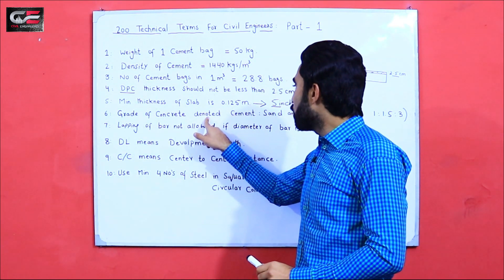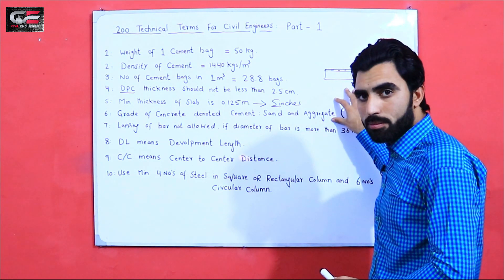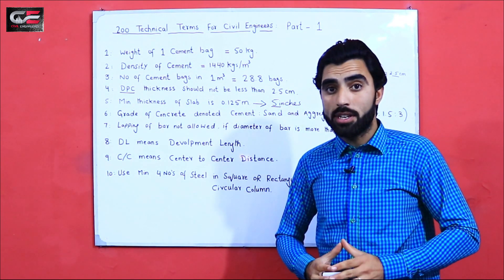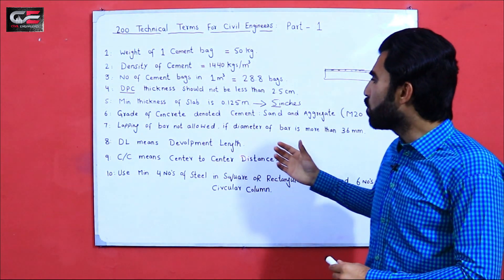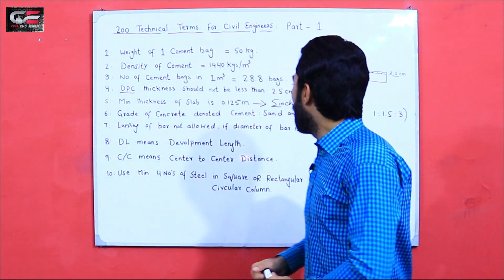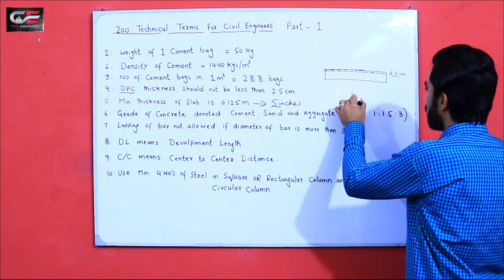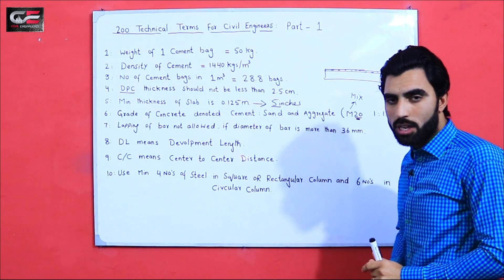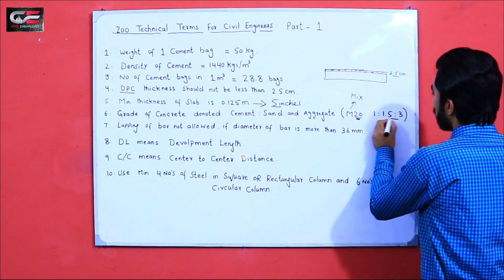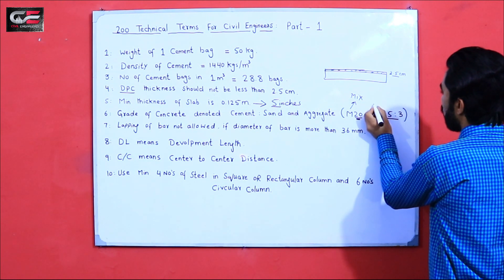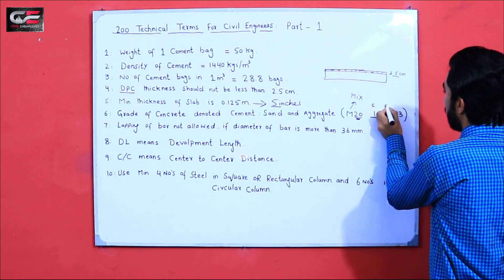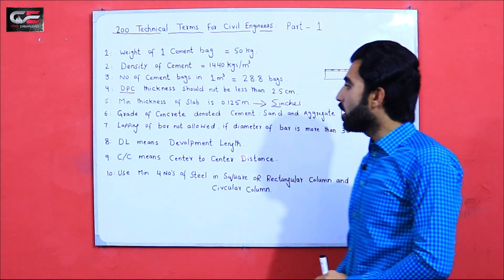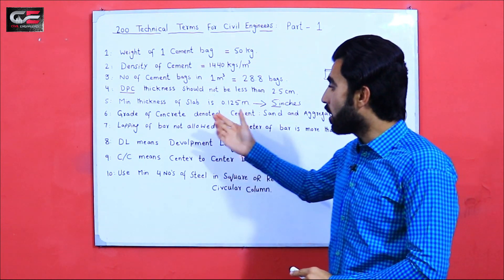The sixth term is grade of concrete, which denotes cement, sand, and aggregate. In many videos I have already discussed grades of concrete — the link is in the description. M stands for mix, and the number shows the characteristic compressive strength of concrete after 28 days. So M20 ratio is 1:1.5:3, where 1 is cement, 1.5 is fine aggregate, and 3 is coarse aggregate (CA).